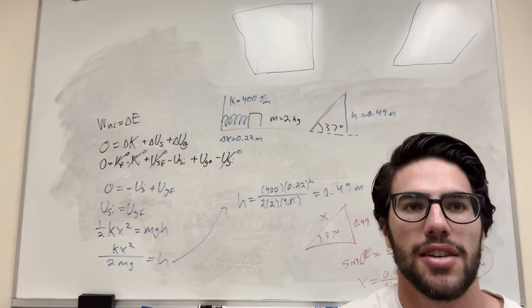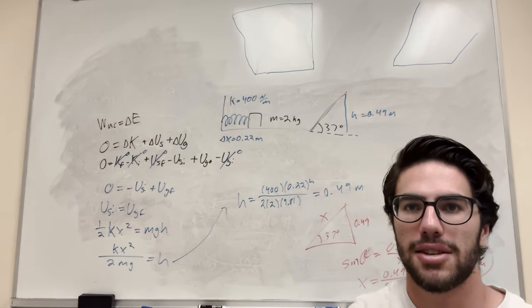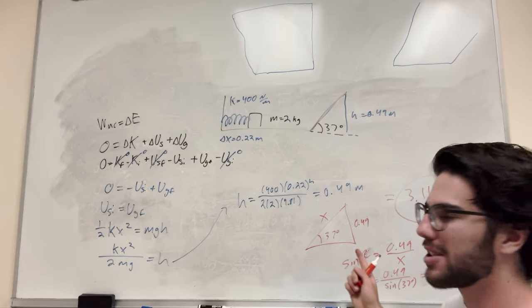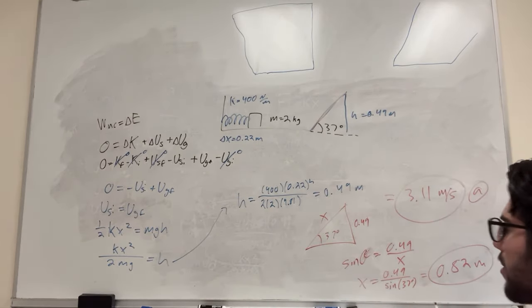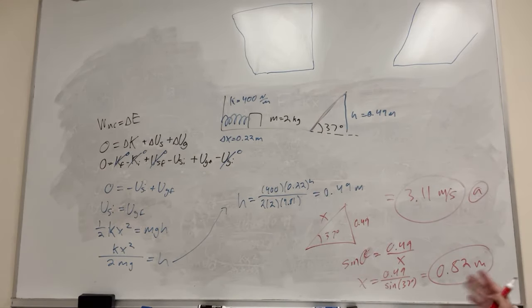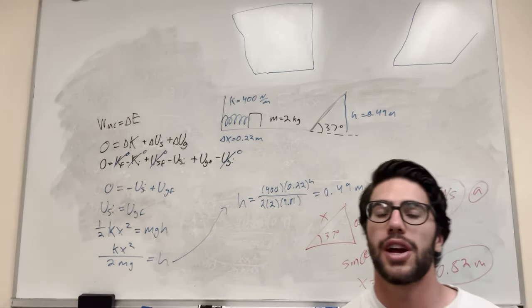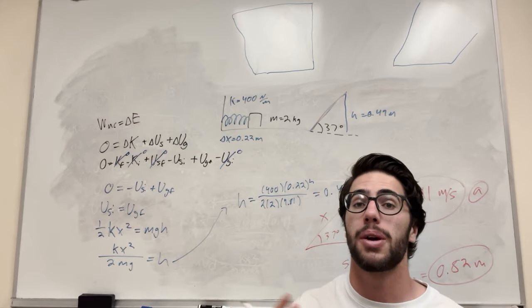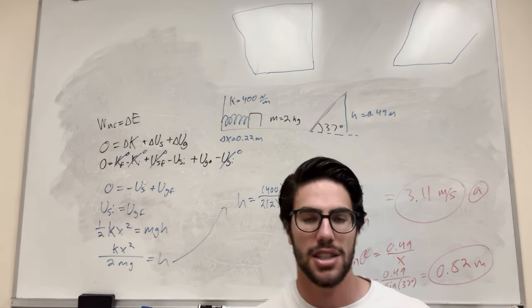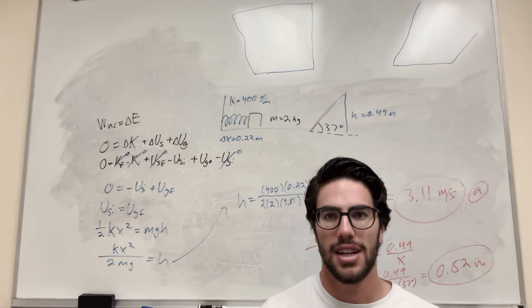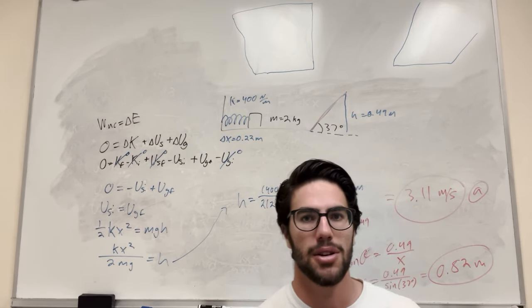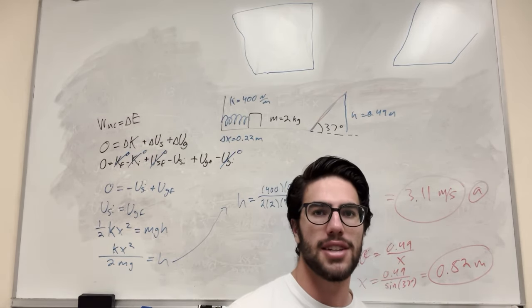And that is how far the block goes up the incline. So there you go — that's how you do this whole problem, Part A and Part B. Basically check out the work-energy theorem, figure out when things cancel and when they don't, and you'll be good. Good luck on your physics homework guys, see you next time!